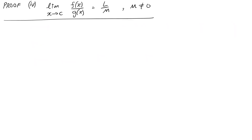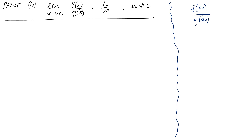We'll do one more to reinforce the idea — this one has a slight trap in it, so it's worth extra attention. We want to prove the same thing for quotients. We'll form the sequence f(a_n) over g(a_n), where a_n is the same kind of sequence as before. The only issue is that g(a_n) — some of these terms could be zero, which would cause parts of our proof not to be defined properly. So before we dive in, we need to do a little work on our sequences.